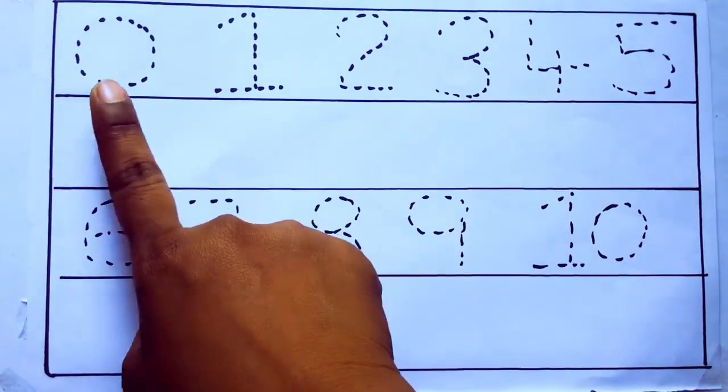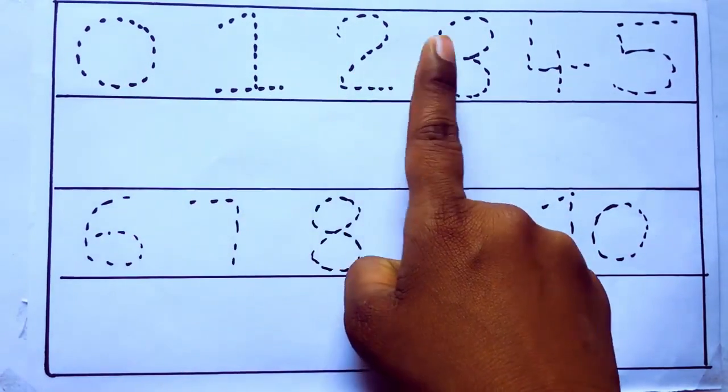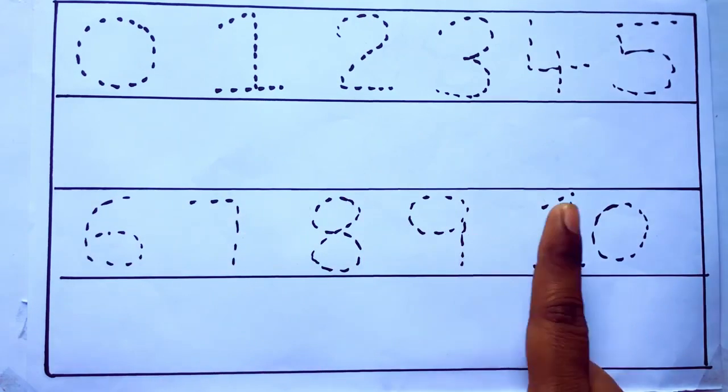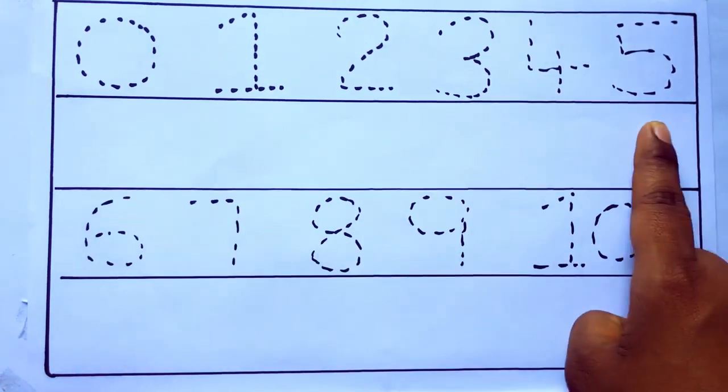0 to 10: 0, 1, 2, 3, 4, 5, 6, 7, 8, 9, 10 and rewriting the numbers.